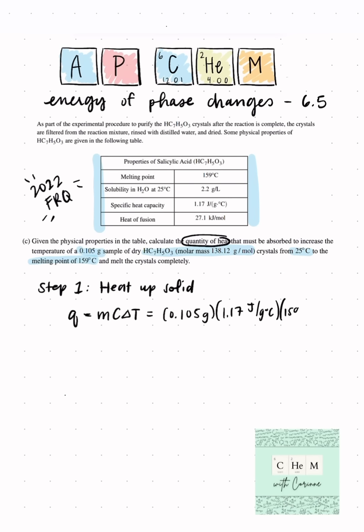So step one, we are just going to heat up the solid and we will use q equals mc delta t to figure out the heat associated with just that process. We're using q equals mc delta t to find out the energy associated with heating it from 25 to its melting point of 159 degrees.